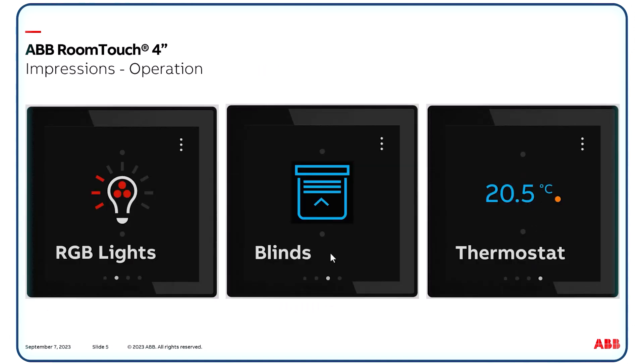Here you get some impressions of how to operate functions like lighting control. You click on the icon to turn on the light. Via the three dots on the upper right side you come to a further page with more options to operate something, for instance to select the color of the light, stop the blinds, or change the setpoint for room temperature control.